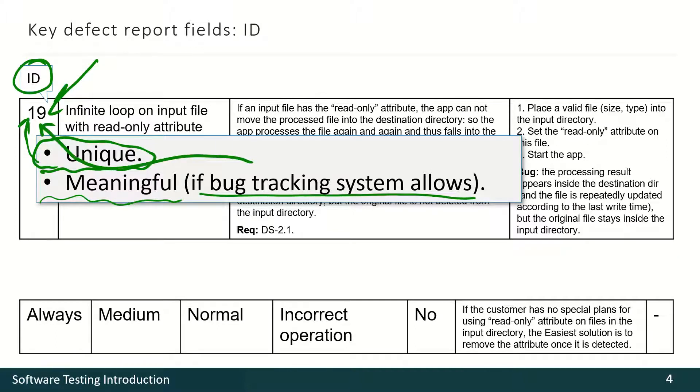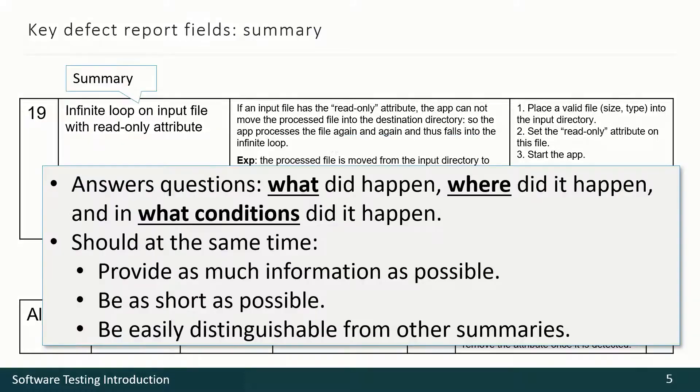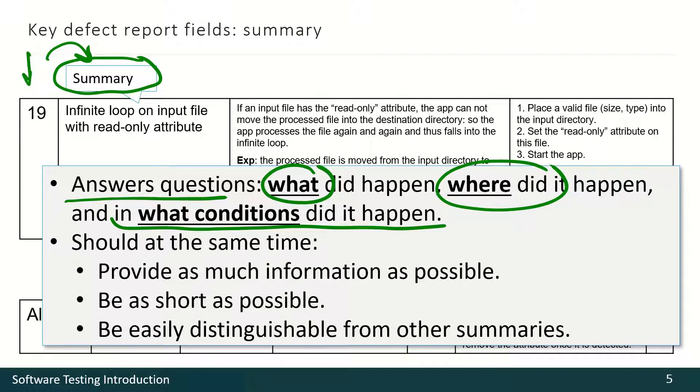But usually it's just a unique number. And now we are jumping from the simplest field to the most complex one – summary. Summary answers three questions: What has happened? Where has it happened? And in what conditions has it happened?